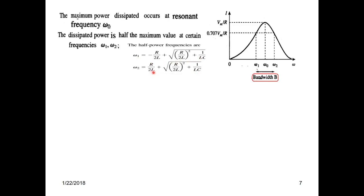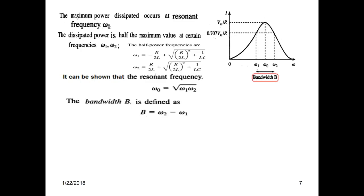One formula for calculating the half-power frequencies gives us two values: omega 1 (also called omega low) and omega 2 (also called omega high). We won't go into the derivation — you can refer to your book. Once omega 1 and omega 2 are found, the resonant or center frequency is the square root of their product. The bandwidth is omega 2 minus omega 1.